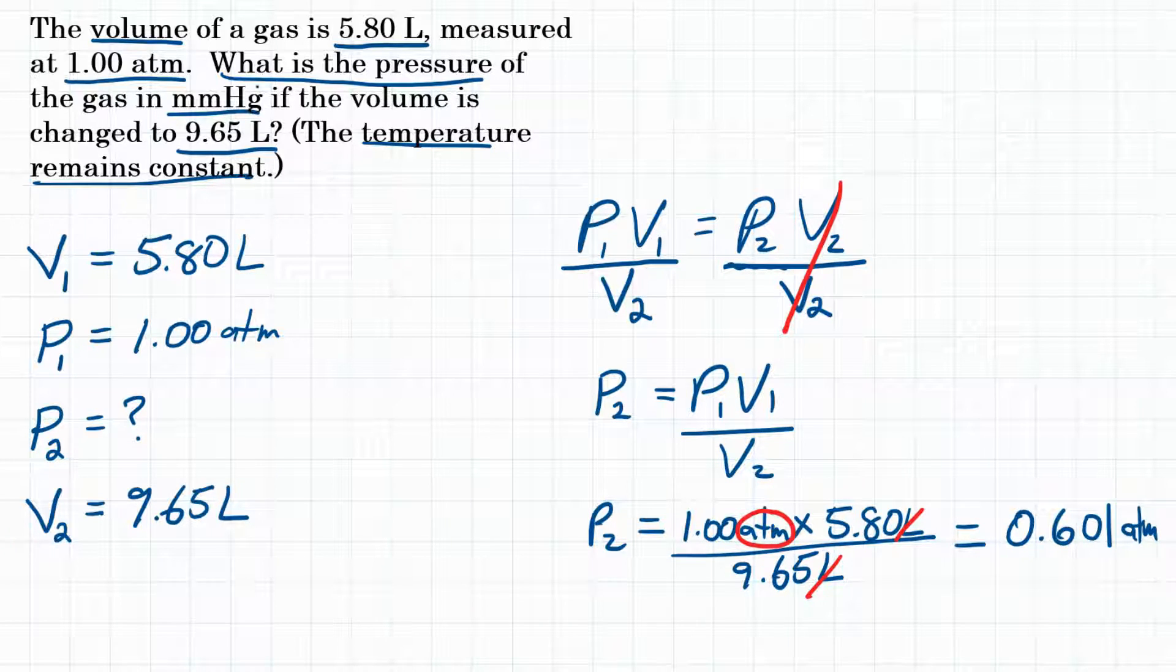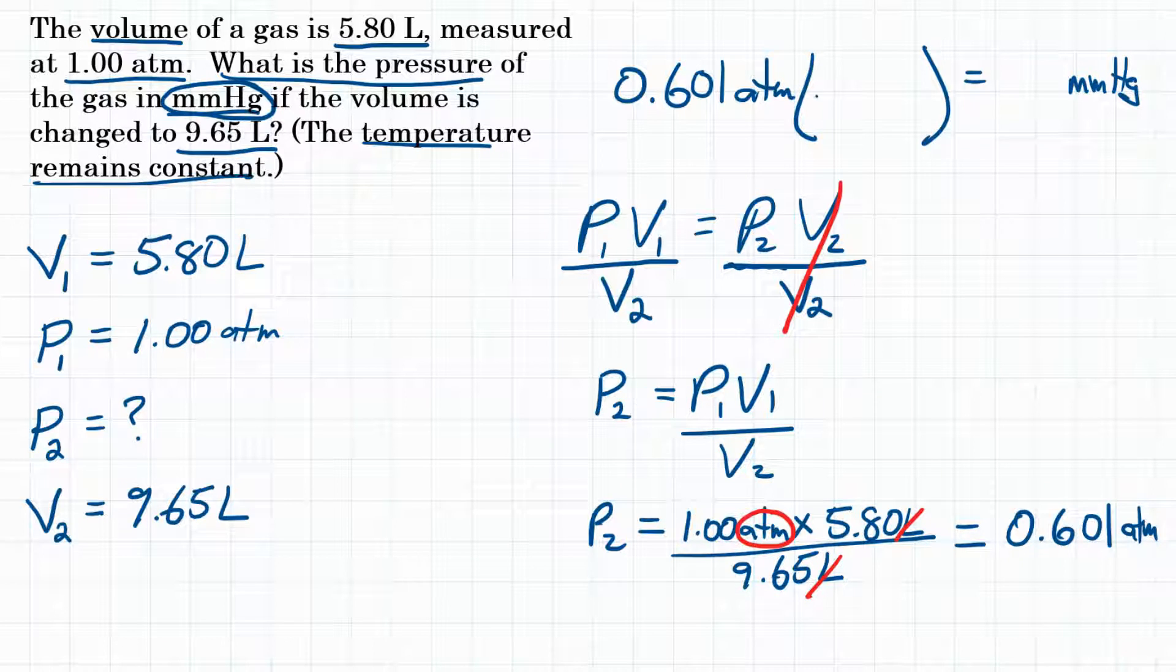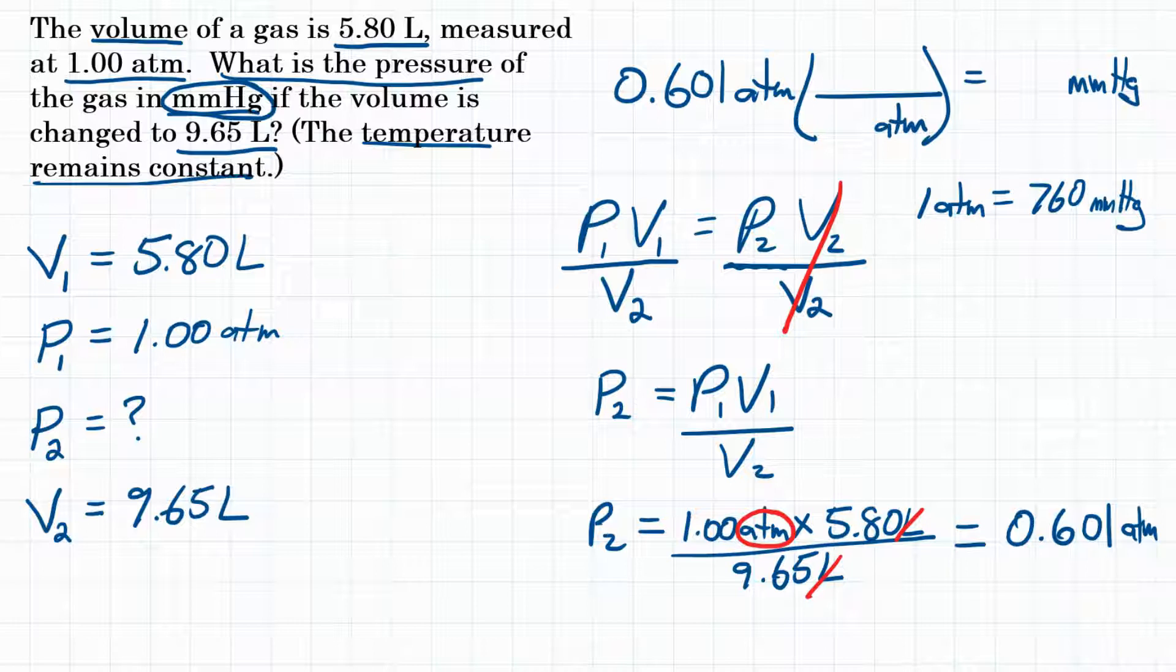Now, the question was looking for millimeters of mercury. So we are not done yet. We need to convert this to a different unit. So let's do that unit conversion. We have 0.601 atmospheres, and we need that in millimeters of mercury. So we're going to multiply by a conversion factor. For that conversion factor, we need the relationship between these two units. Well, 1 atmosphere is equal to 760 millimeters of mercury. So since we're starting with atmospheres, that unit will be on the bottom, 1 from our relationship. And since we want millimeters of mercury, that unit will be up top our conversion factor, 760, because 1 atmosphere is 760 millimeters of mercury. Our units will cancel and we will be left with millimeters of mercury.